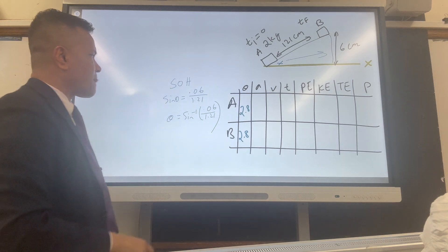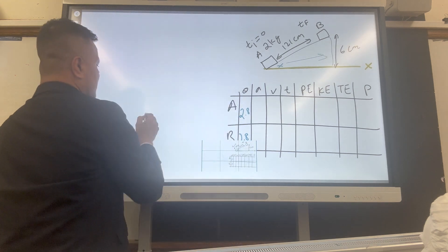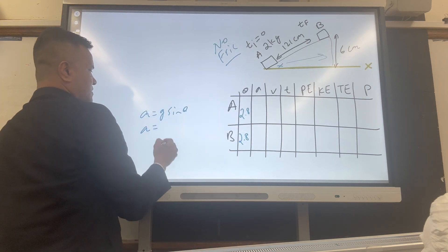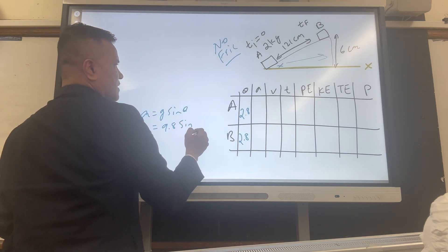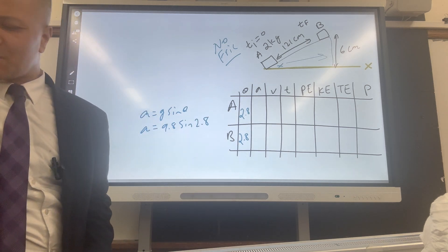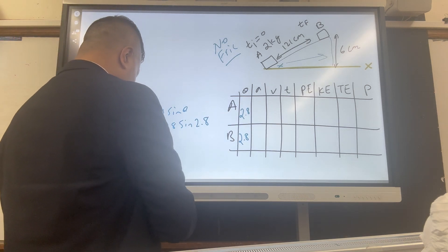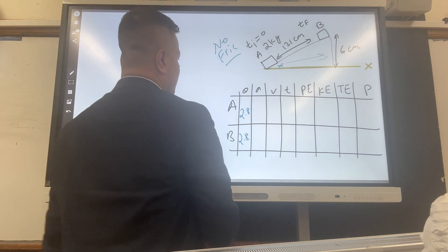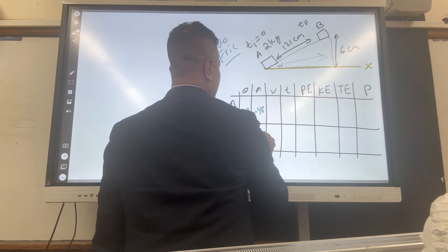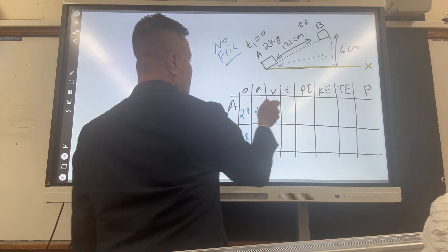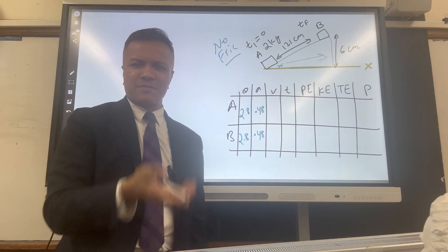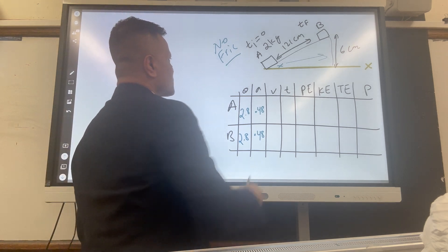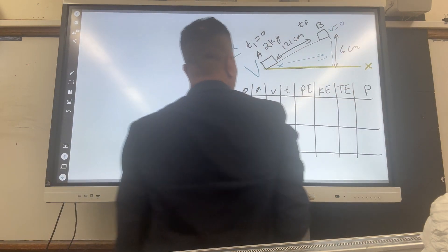Since there is no friction, acceleration = g sin θ = 9.8 × sin 2.8° ≈ 0.48 m/s². The acceleration is constant. The velocity is maximum at location A — just like when you toss something upward, the velocity is greatest when it leaves your hand and decreases to zero at the top. So velocity is large at A and zero at B.